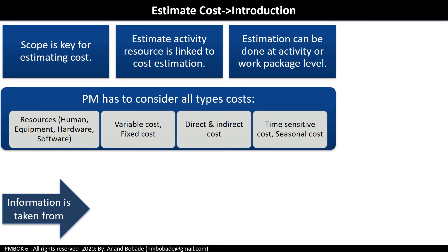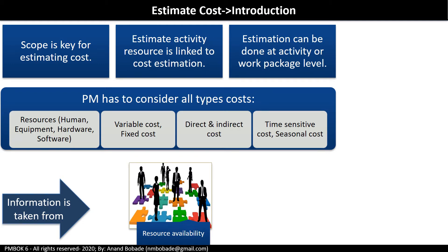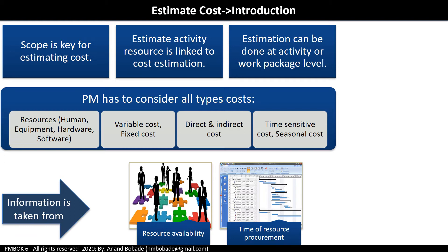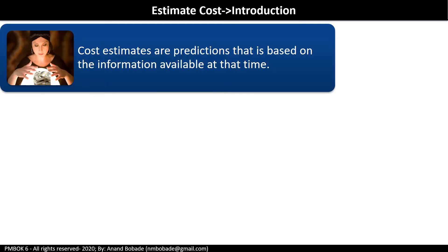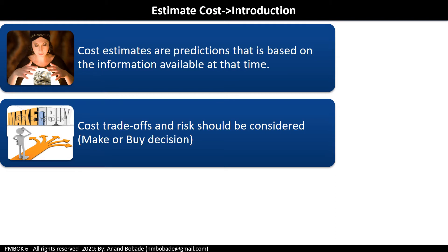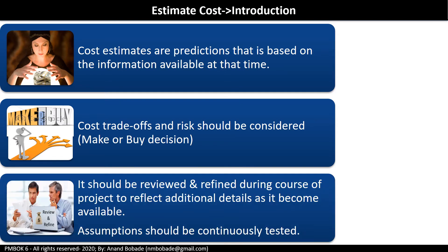The project manager must also consider direct and indirect cost, as well as time-sensitive or seasonal cost. Information is gathered from various processes — for example, resource availability from resource management, time of resource procurement from schedule management, and project financing details from the cost management plan. Cost estimates are predictions based on the information available at the time of estimation. Cost trade-offs and risk should be considered, especially during make-or-buy decisions. Estimation should be reviewed and refined during the course of the project, and assumptions should be continuously tested and added or removed accordingly.